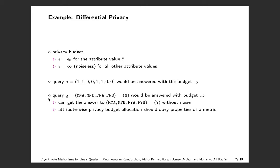Note that a privacy budget of infinity corresponds to not adding any noise to the query answers. Any linear query q with non-zero value for coordinates 1, 2, 5, or 6 will be answered with budget epsilon_0, since these coordinates contain the sensitive attribute value y. All remaining queries are answered with a privacy budget of infinity. Even though this sounds like a reasonable strategy, consider a linear query that has 1s in the coordinates corresponding to the attribute value n and 0s elsewhere — this query corresponds to the number of non-native people in the dataset. Using the above strategy, this query would be answered with a privacy budget of infinity. Since the total number of entries n is assumed to be publicly known, one can get a noiseless answer to the sensitive query that has 1s in the coordinates for attribute value y, corresponding to the number of native people in the dataset. This example shows why attribute-wise privacy budget allocation should obey the properties of a distance metric.